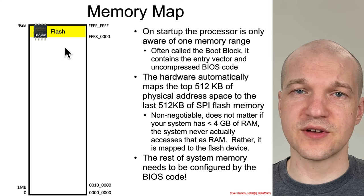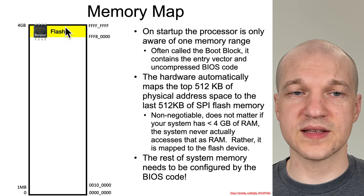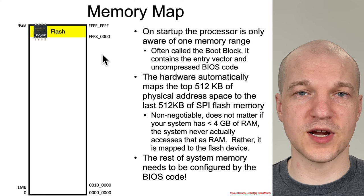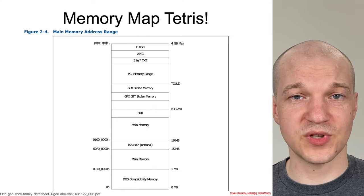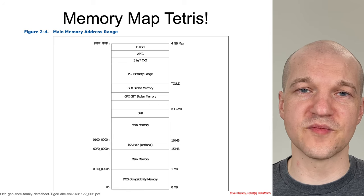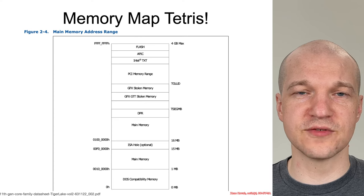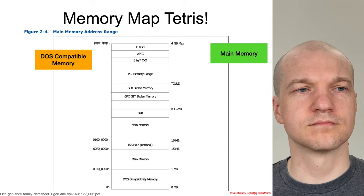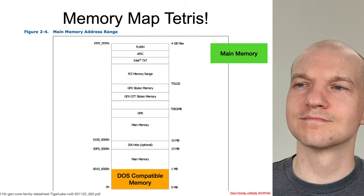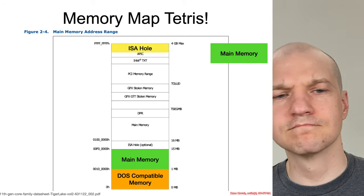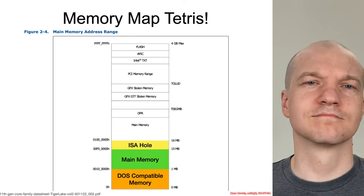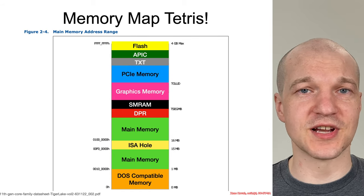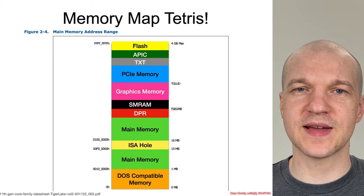If this is all the BIOS knows about when it's first getting started, then the BIOS needs to configure a whole bunch of other stuff in order to understand what's where in memory. It effectively has to play Tetris with a number of different areas of memory, all of which have their own various rules and usages — essentially filling in this area of memory. That's the BIOS's job: to fill in this memory map, understand what's mapped where, and make sure things don't overlap, because that can cause very strange and potentially security-relevant behavior.